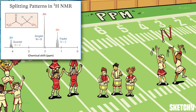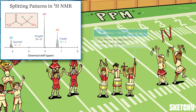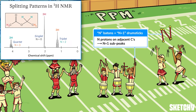...N plus one sub-peaks — that's the N plus one rule. So if there are two protons on the next-door carbon, the original peak will be split into three sub-peaks called a triplet, with the tallest sub-peak in the middle.